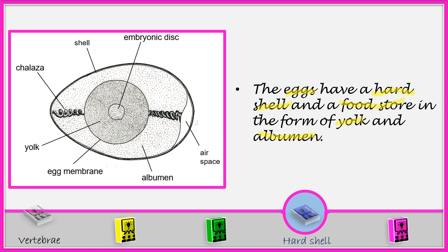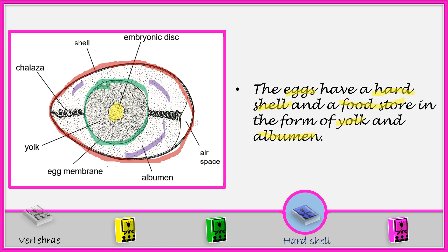So we say that the embryonic disc is the one that is going to turn into a chick. But this egg is surrounded by a shell, which means that the embryo is not going to receive nutrients from outside the shell. So what is going to provide the nutrients is going to be the yolk. The albumen is also going to provide nutrients to the developing embryo.